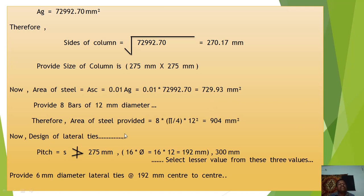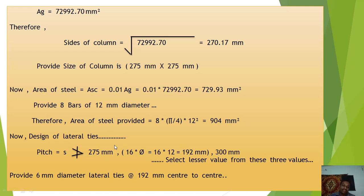Now design the lateral ties (stirrups). As per IS 456, the pitch of stirrups should not be greater than: (1) the least lateral dimension of the column = 275 mm, (2) 300 mm, or (3) 16 times the diameter of main reinforcement bar = 16 × 12 = 192 mm. Among these three values, we select the least, which is 192 mm. Provide 6 mm diameter lateral ties at 192 mm center to center.